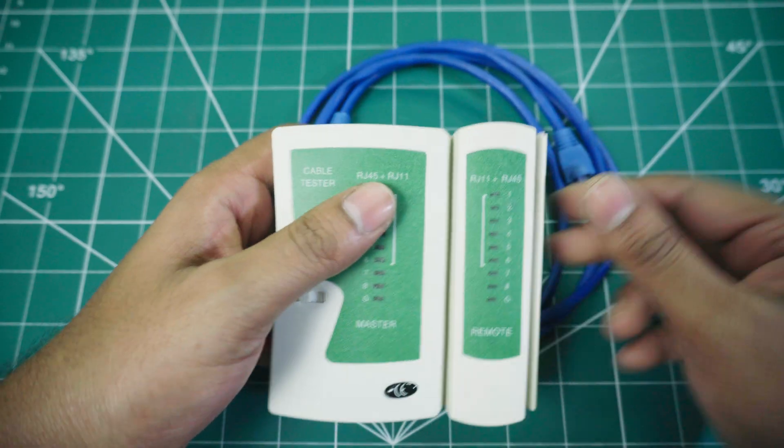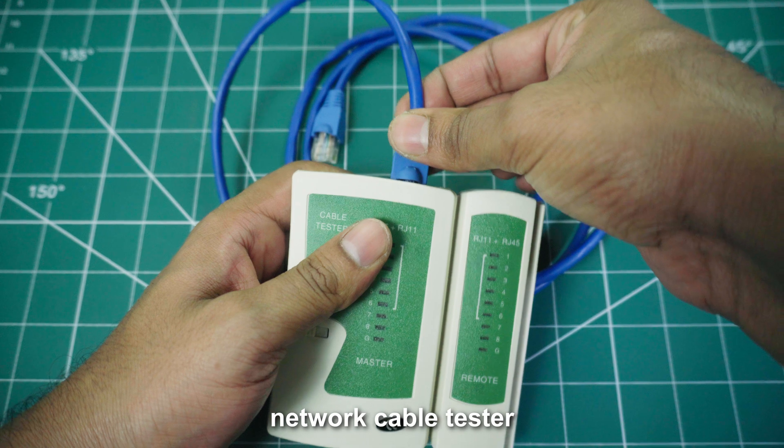Now, to test the cable, connect the wire to the master and remote of the network cable tester and then turn it on.